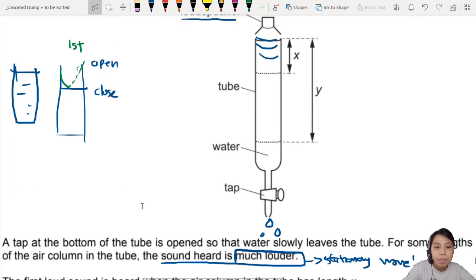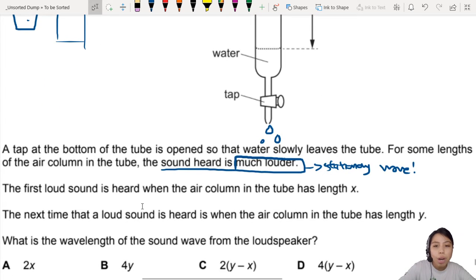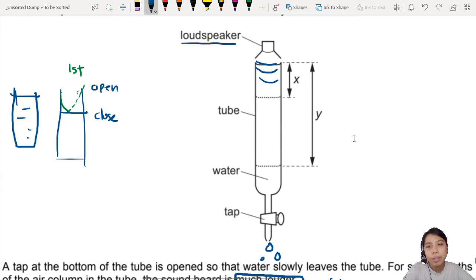But what's changing though, we continue to drop the water level. And the next time a loud sound is heard is when the tube has length Y. What is the wavelength of the sound from the speaker? Let's draw it out and see. I'll use this diagram here since I already have it.